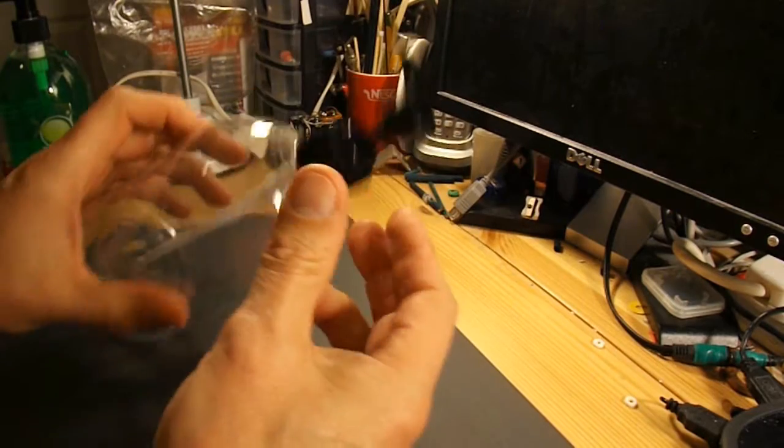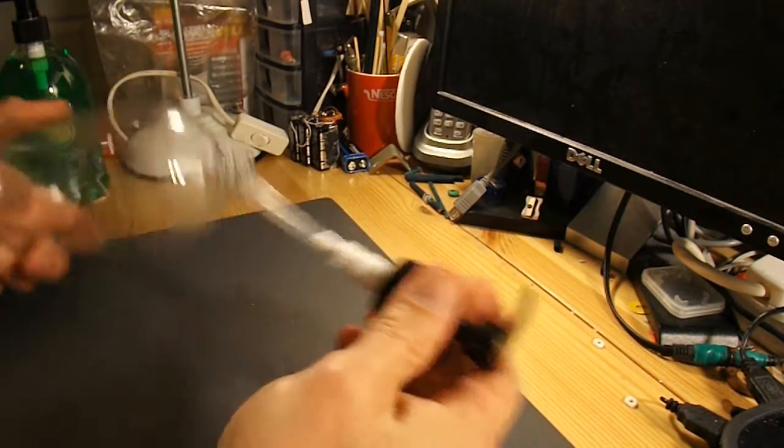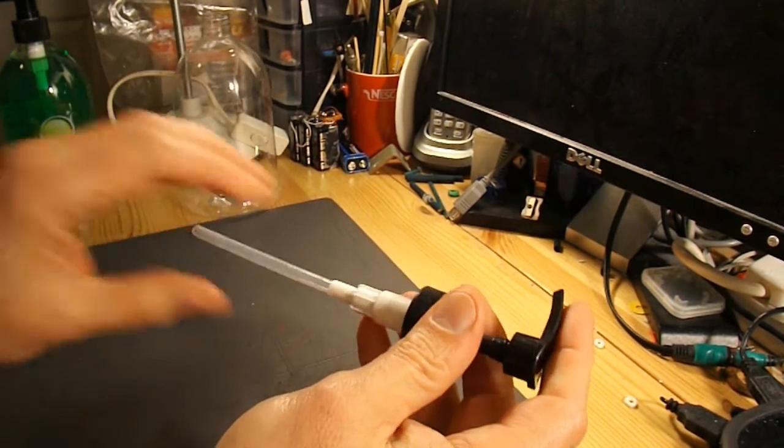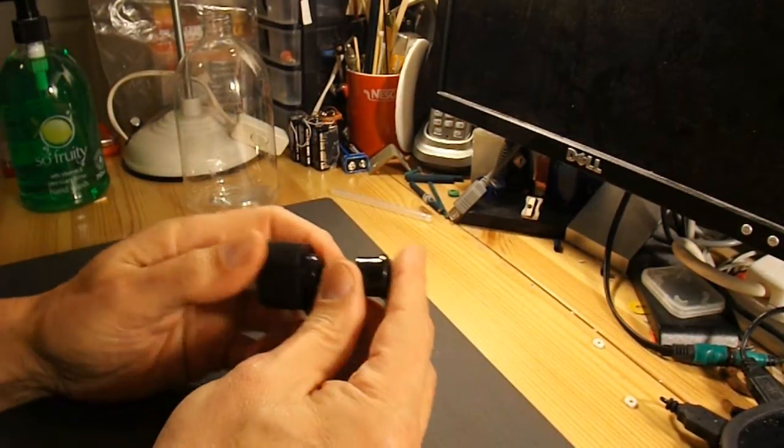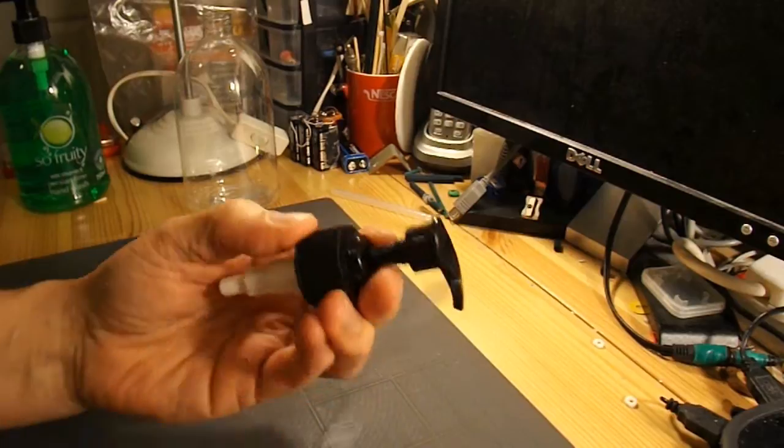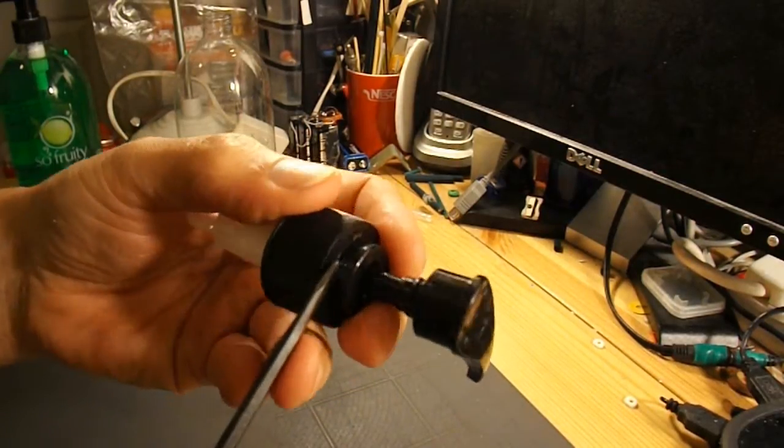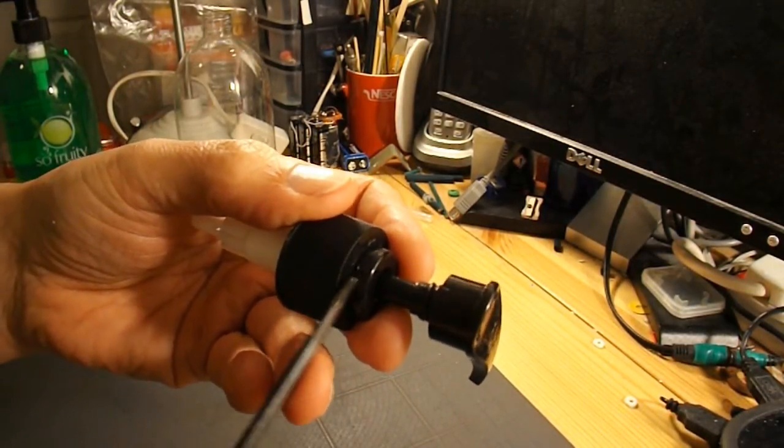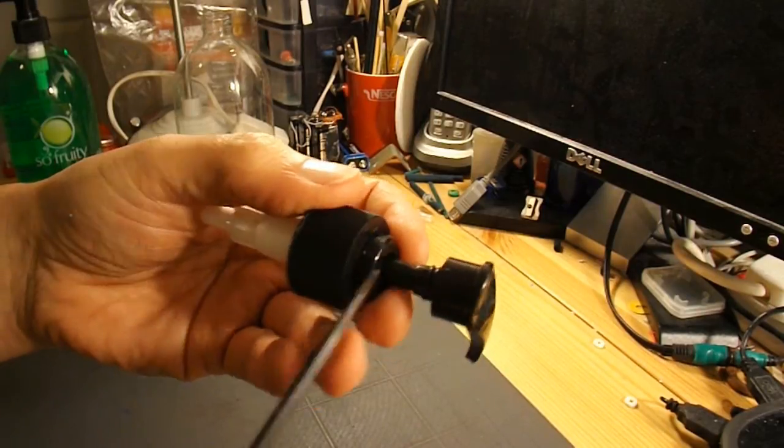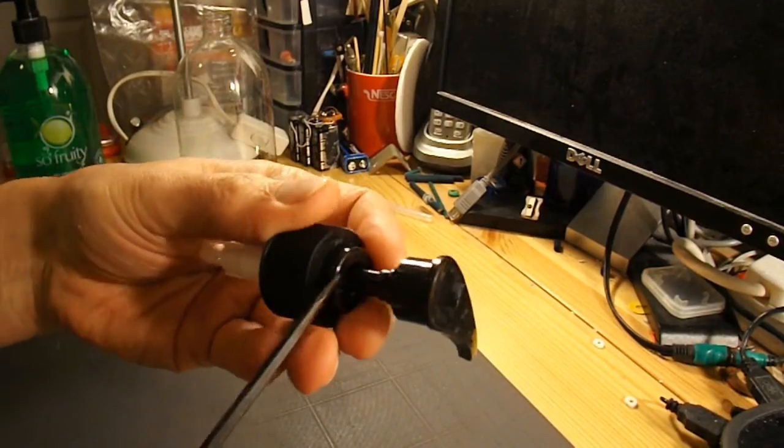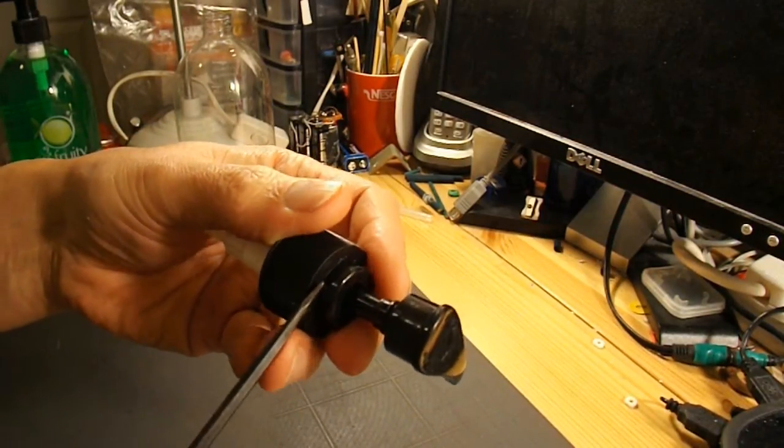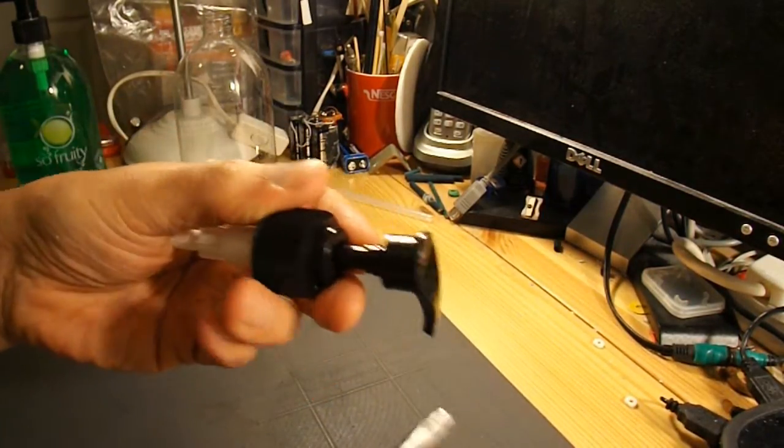So the next stage is to take apart the pump and convert it into an air valve. What we need to do is the pump's held in place by a plastic ring here that connects onto the bottom part of the pump, and I need to lever that off. I could cut it off, but I actually want to use it again, so I need to lever it off with a screwdriver.